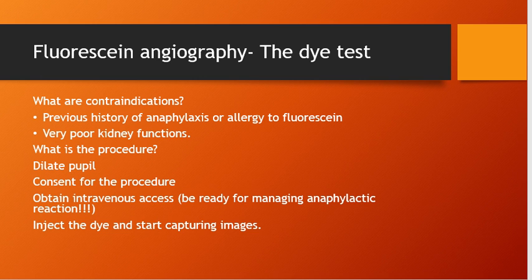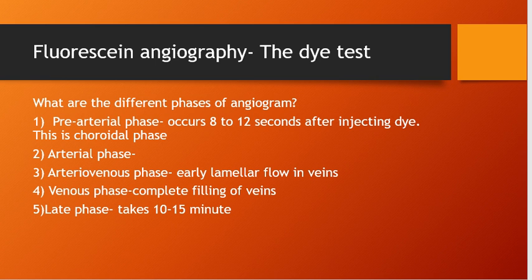Once intravenous access is obtained, inject the dye and start capturing images. Initially images are taken every few seconds, then at a few minutes interval, with a last image at around 15 minutes. There are five phases of a normal fluorescein angiogram. First is the pre-arterial phase — after injecting the dye in the arm it takes 8 to 12 seconds before it appears in retinal circulation, also called the choroidal phase. This is followed by the arterial phase, then the arteriovenous or capillary phase with early lamellar flow in the veins, then the venous phase with complete filling of the veins, and finally the elimination or late phase, which may take up to 10 to 15 minutes.